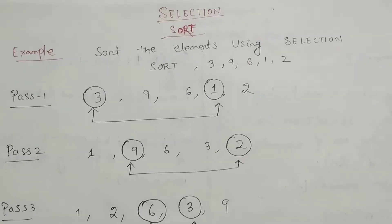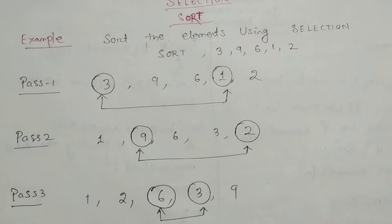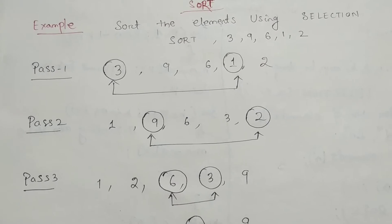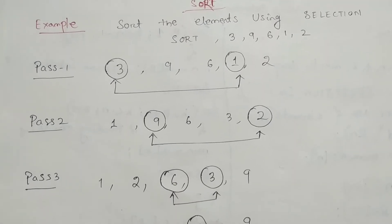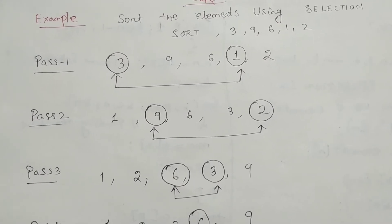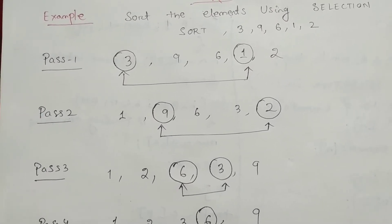So here you can see the elements are given: 3, 9, 6, 1, 2. And in this list, in pass one, 1 is the minimum element in this list. So we have to swap it to its proper position. It comes to the first position.